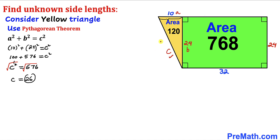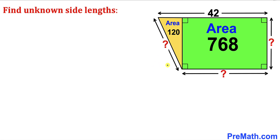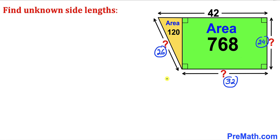After all calculations, our side lengths turn out to be: 32 units, 24 units, and 26 units. That's our final answer. Thanks for watching and please don't forget to subscribe to my channel for more exciting videos.